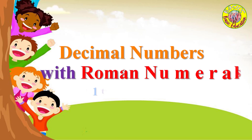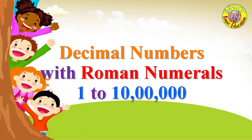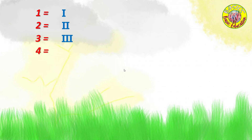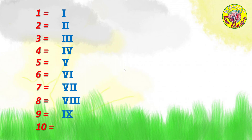Decimal Numbers with Roman Numerals 1 to 10 lakhs. 1, 2, 3, 4, 5, 6, 7, 8, 9, 10.